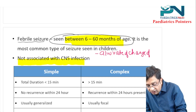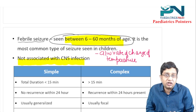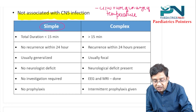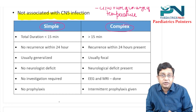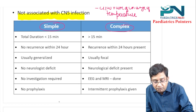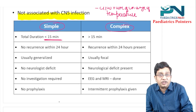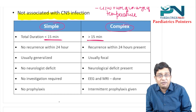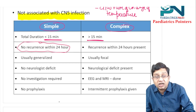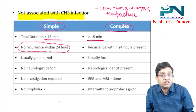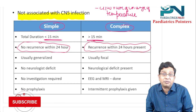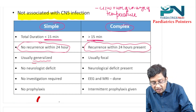Febrile seizures are associated with the rate of change of temperature — if temperature suddenly increases or suddenly decreases, both can cause a febrile seizure. There are two types: simple febrile seizure and complex febrile seizure. In simple febrile seizure, the total duration is less than 15 minutes; in complex, it is more than 15 minutes. In simple febrile seizure, there is no recurrence within 24 hours, but recurrence within 24 hours is present in the complex febrile seizure.